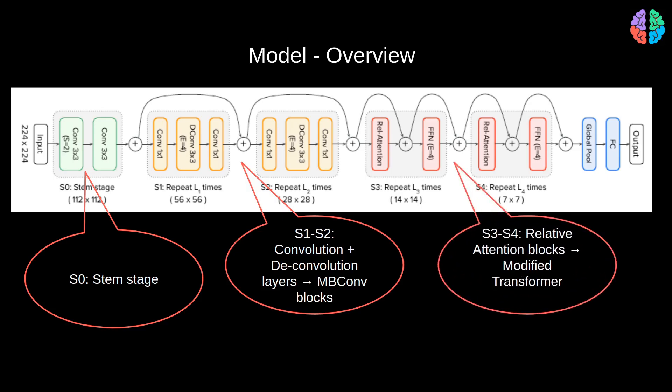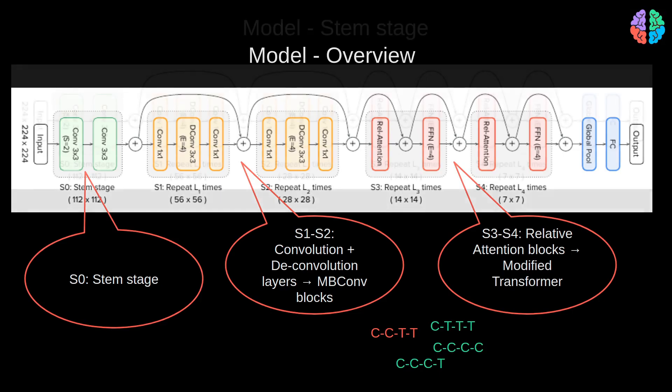Now you may ask what's inside these stages that makes this network special. And before we look into the details, let's just keep in mind that what we see here is two conv and two transformer blocks. But it's also possible to change these numbers and experiment with different combinations like one convolution block and three transformer blocks, or three convolution block and one transformer block, etc. So now let's look into each of the stages one by one.